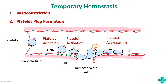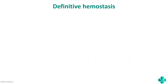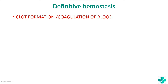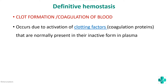When a question is asked about hemostasis, we have to mention both temporary hemostasis as well as definitive hemostasis. Definitive hemostasis is where the actual clot formation or coagulation of blood takes place. It occurs due to activation of clotting factors which are normally present in the inactive form in the plasma. The temporary hemostasis is just for temporarily plugging the defect, whereas definitive hemostasis will actually cause clot formation through activation of the clotting factors.